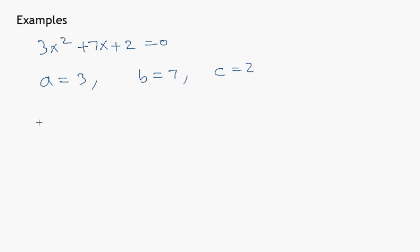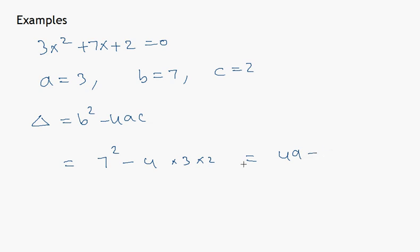Let us find the discriminant now. Delta equals b squared minus 4ac equals 7 squared minus 4 times 3 times 2, which gives 49 minus 24, that is 25, which is greater than zero. This means the roots are real and distinct.